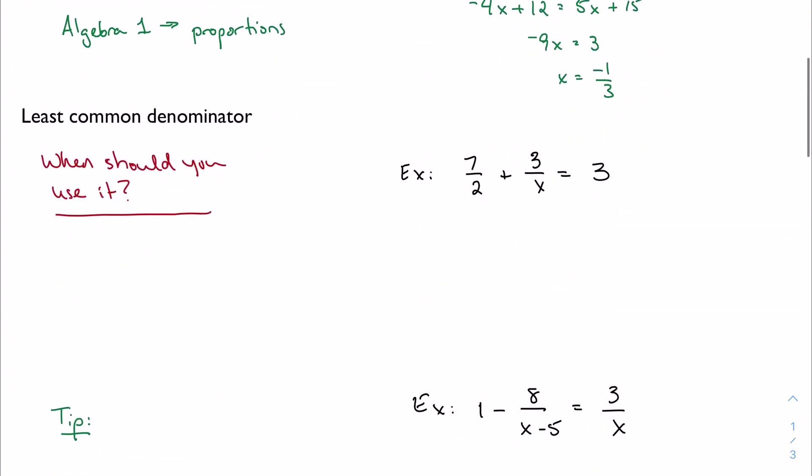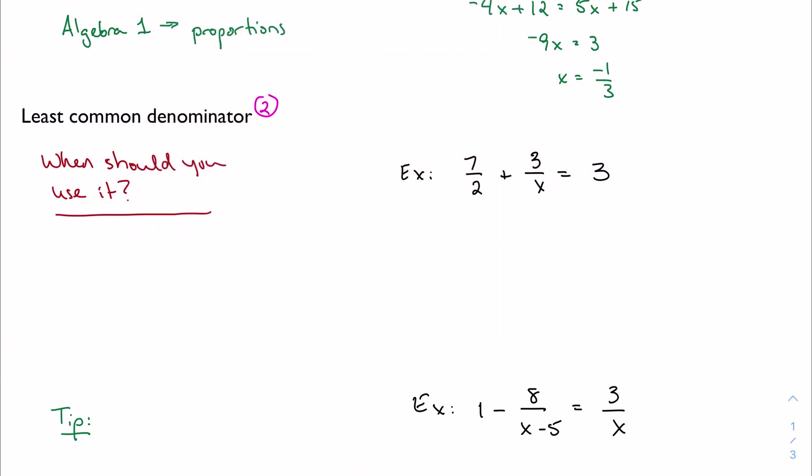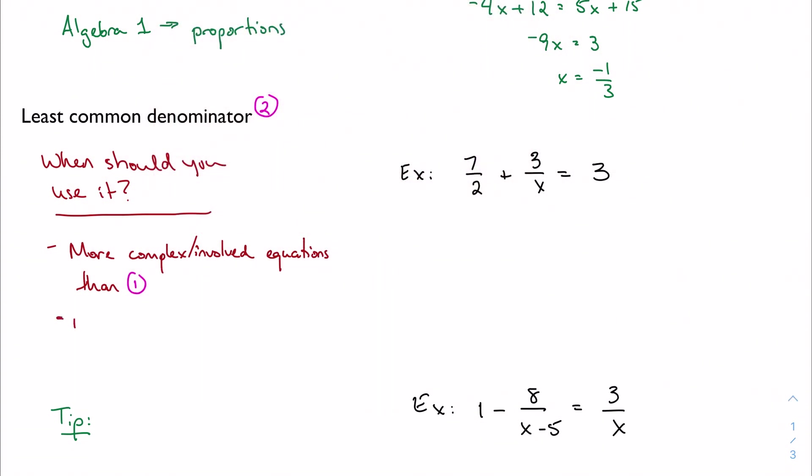Method 2 is the least common denominator. When should I use it? I should probably use it with more complex or more involved equations than the types of things that I would use my cross-multiplication method for. So you might see multiple terms on one side of the equation.